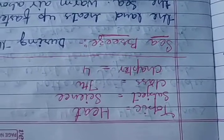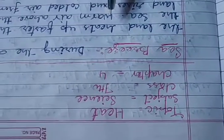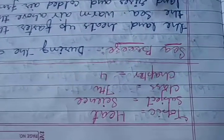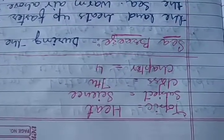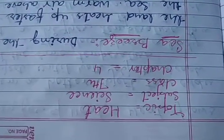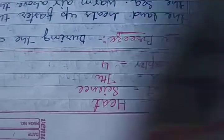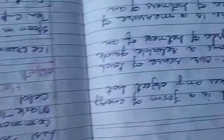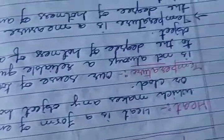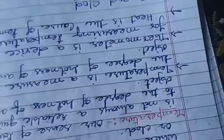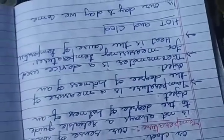Assalamu alaikum. This is Class 7th, Subject Science, Chapter No. 4 — Heat. Topics covered include Heat, Temperature, Hot and Cold Objects, Clinical Thermometer, and Sea Breeze.